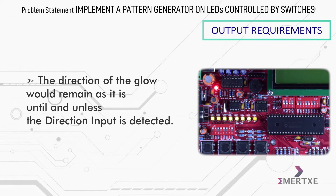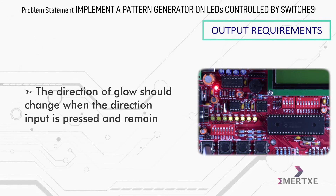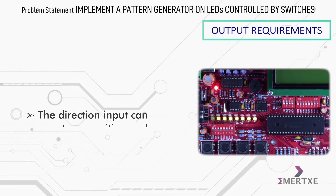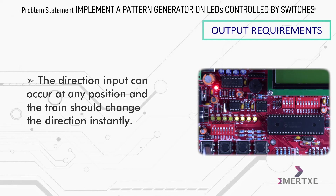The direction of the glow would remain as it is until and unless the direction input is detected. The direction of glow should change when the direction input is pressed and remain the same until the next input. The direction input can occur at any position and the train should change direction instantly.